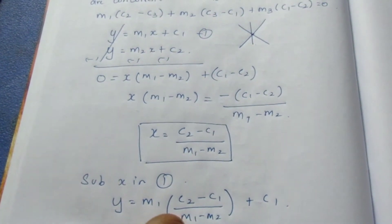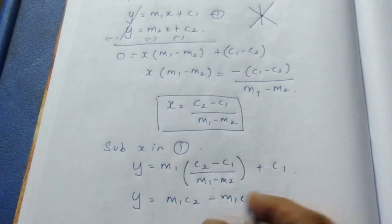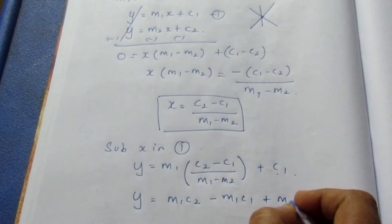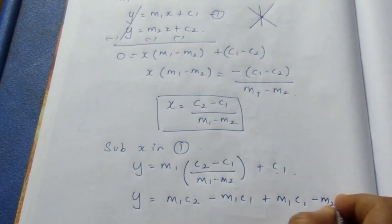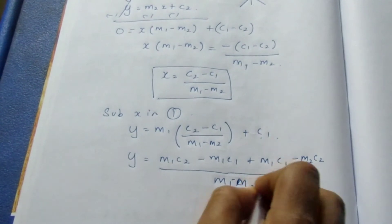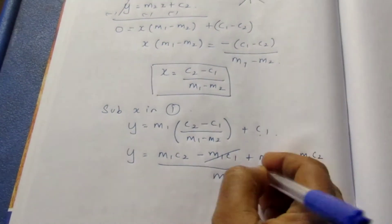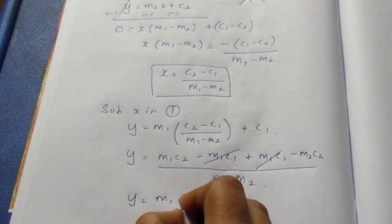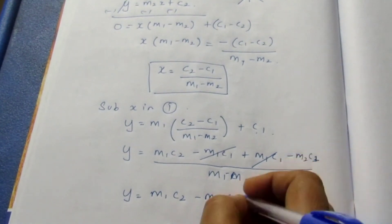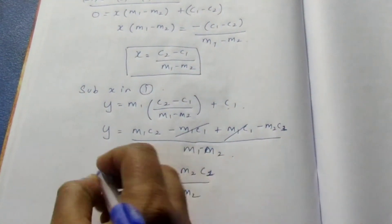Multiplying it inside, we have y = (m₁c₂ - m₁c₁)/(m₁ - m₂). At the same time, I want to do y by LCM. So multiplying here, it becomes (m₁c₂ - m₁c₁)/(m₁ - m₂) = (m₁c₂ - m₁c₁ + m₁c₃ - m₂c₃)/(m₁ - m₂). This is our y.